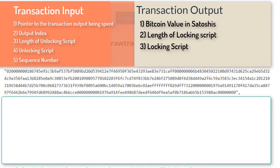We have defined a transaction as the transfer of Bitcoin from one address to another. But as you can see in the original serialized transaction on the block, there is no sender address, no receiver address, no Bitcoin value that was spent, and no mention of any account balance. All these constructs are derived from this transaction and shown at a higher level for ease of understanding.